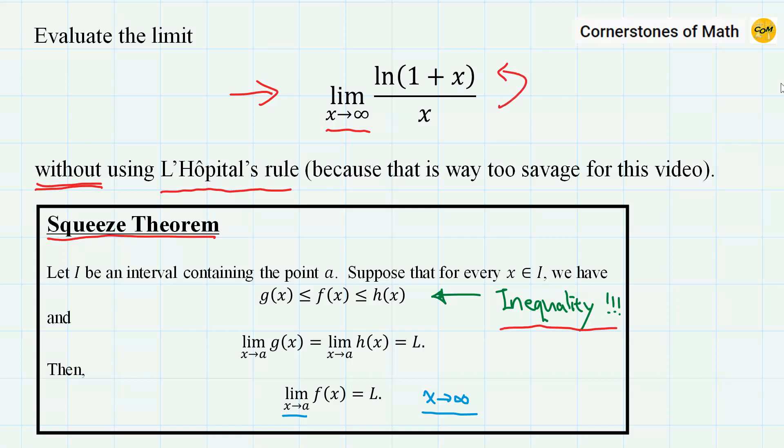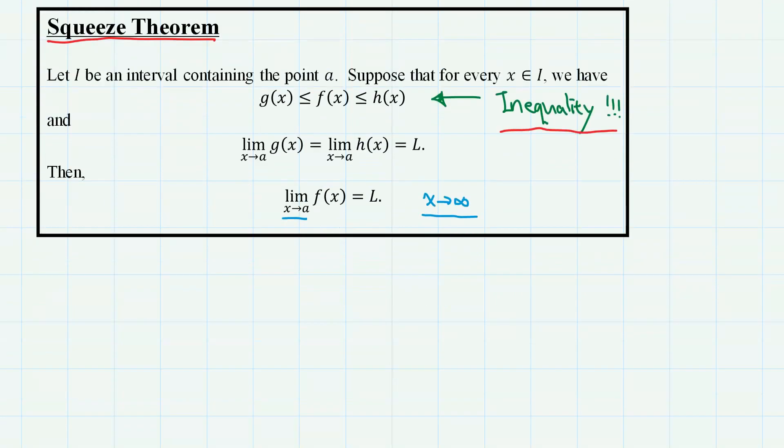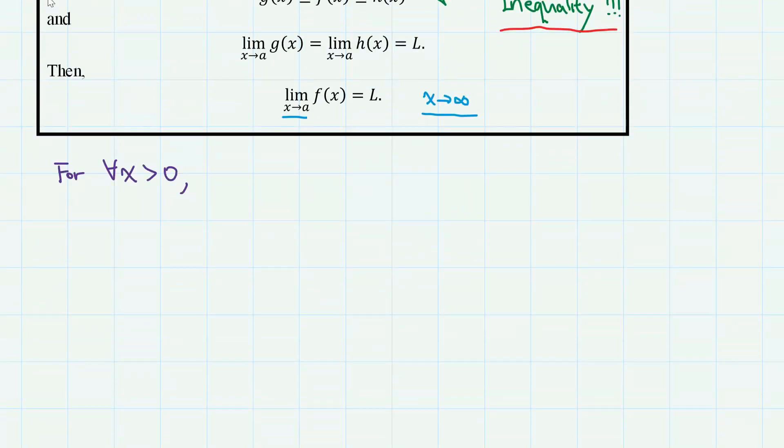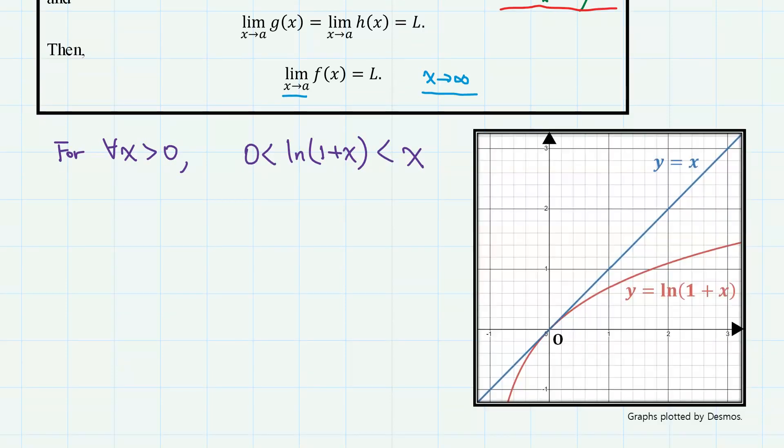For example, if you compare the numerator and denominator, we can easily show that for every positive real number x, ln(1 + x) is greater than 0 and less than x, which is pretty obvious from the graphs, but we can also prove like this.